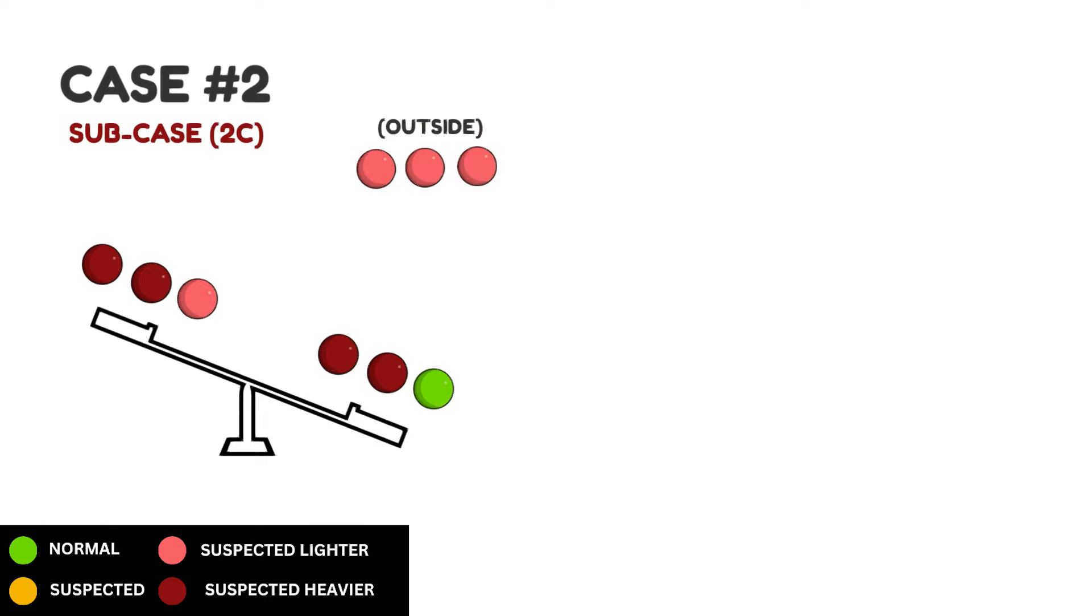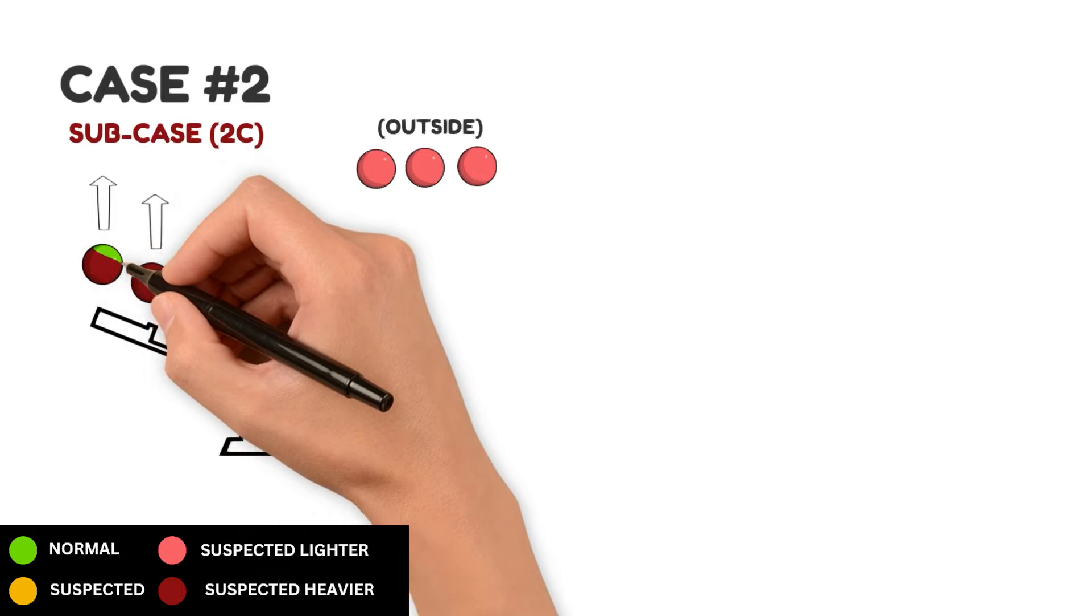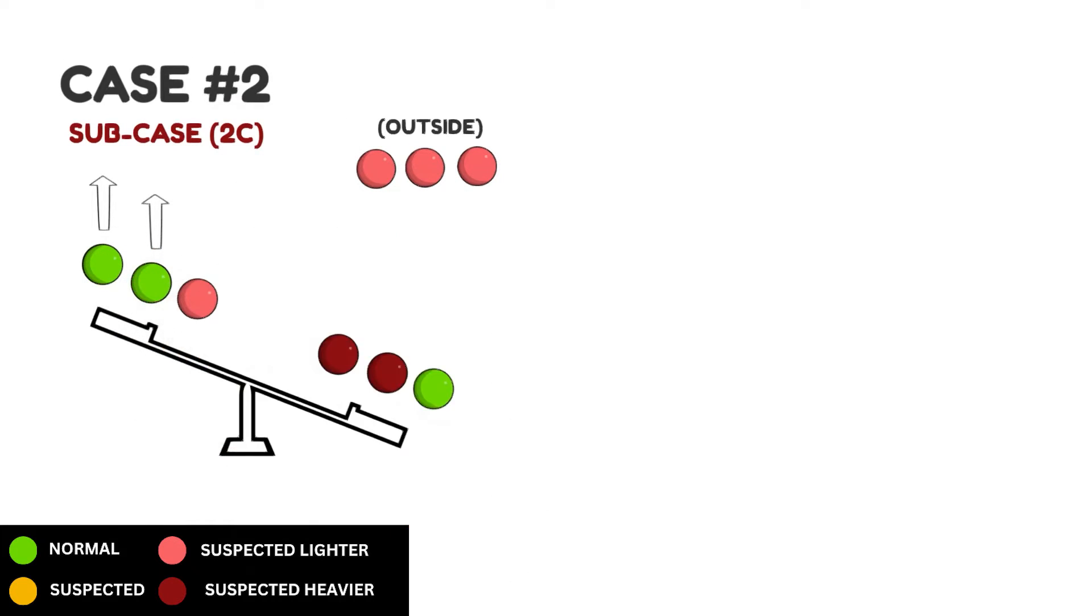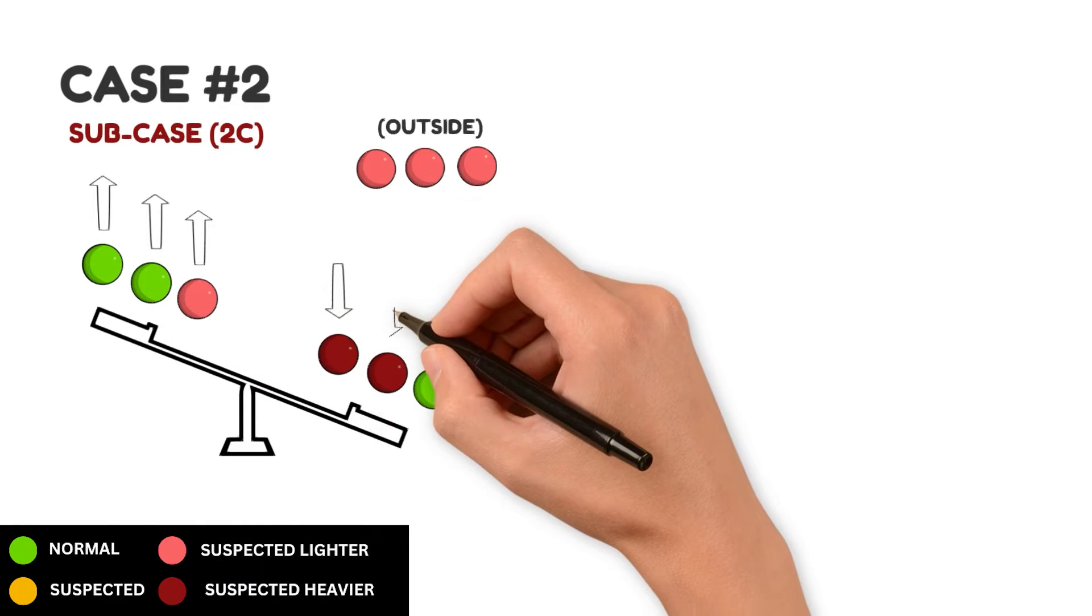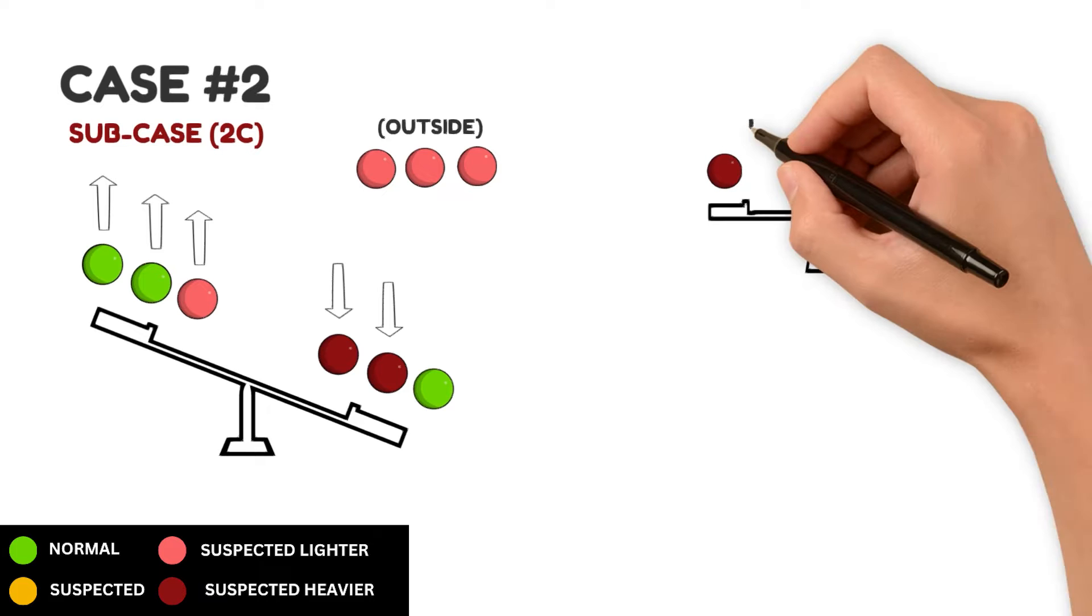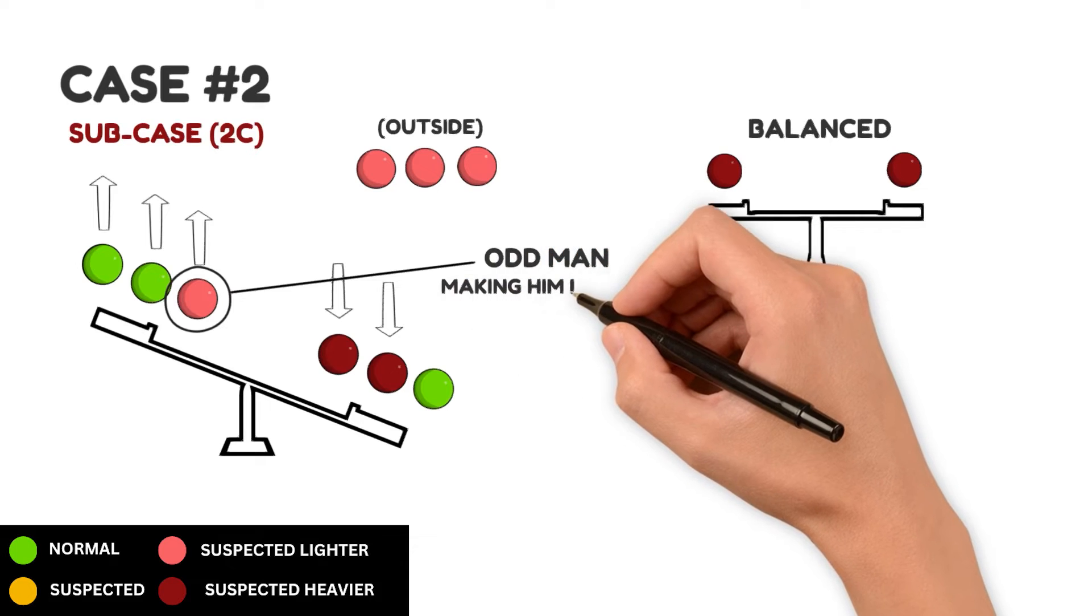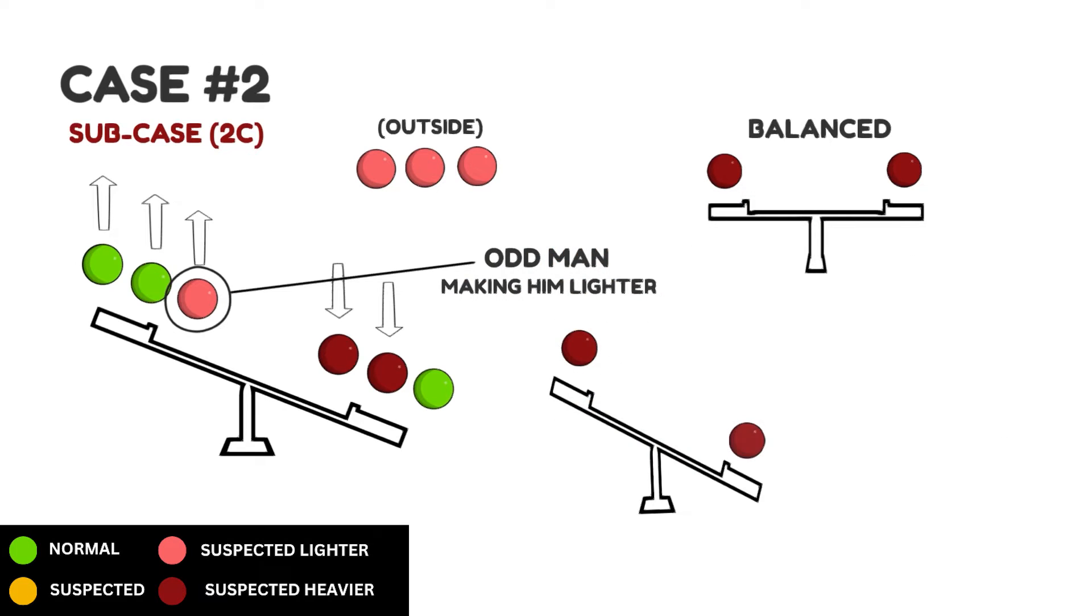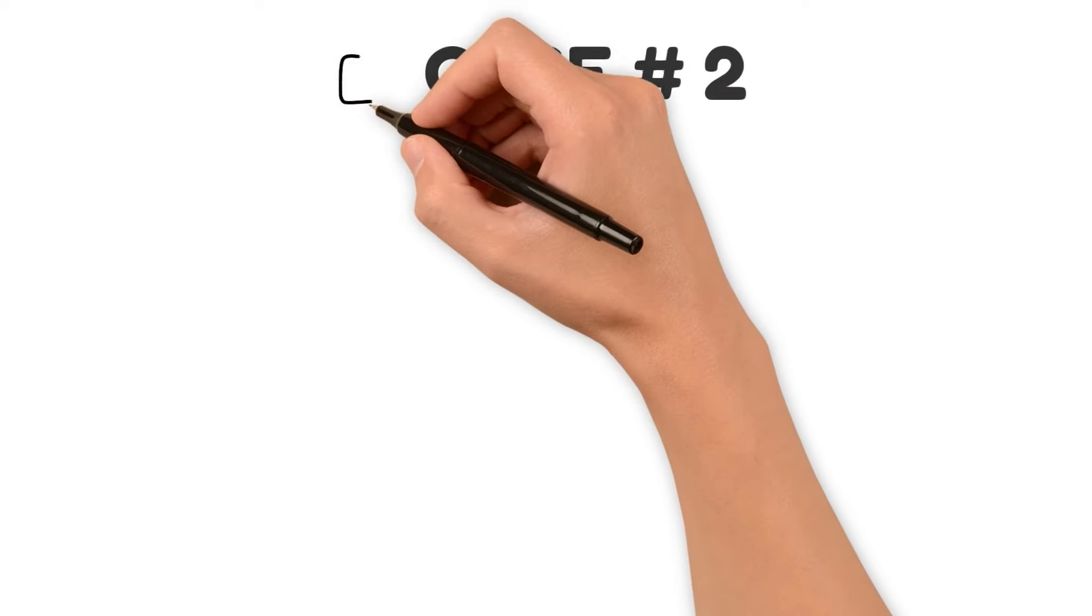For the final sub-case, 2 heavier suspects on the left are going up. That indicates they're of normal weight. We're left with 1 lighter suspect going up and 2 heavier suspects going down. Conduct the final weighing with the 2 heavier suspects. If they balance, then the lighter suspect is the odd man, making him lighter. If they don't balance, whichever side goes down holds the odd man, making him heavier. Case 2 is now completely resolved.